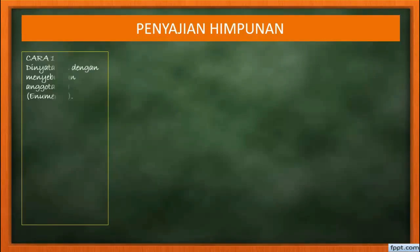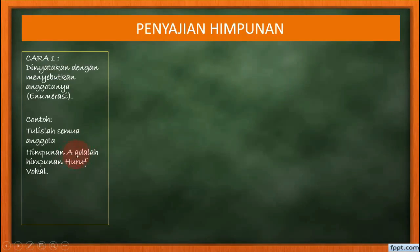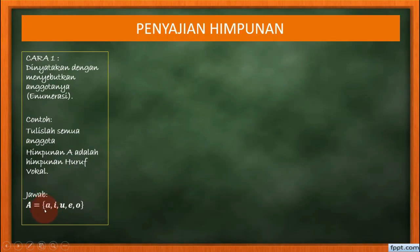Di sini ada penyajian himpunan, dapat disajikan dengan tiga cara. Yang pertama, dinyatakan dengan menyebutkan anggotanya atau enumerasi. Contohnya, tulislah semua anggota himpunan A — himpunan huruf vokal. Maka kita tulis A, di mana A mewakili himpunan huruf vokal. Untuk menuliskan himpunan wajib dengan kurung kurawal, kemudian anggotanya dimasukkan yaitu A, I, U, E, O, dan tutup kurung kurawal. Ini menunjukkan sebuah anggota himpunan.